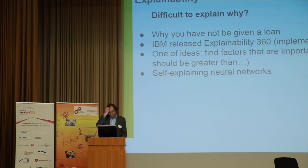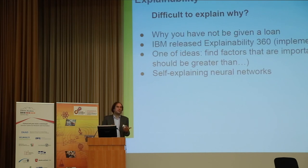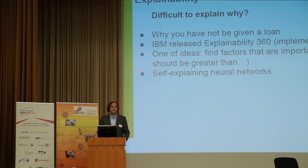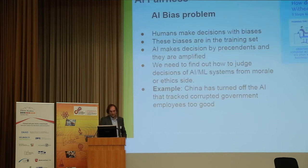It's difficult to explain decisions. IBM tries to do something but just implements it. There is something called self-explaining neural networks and some research in this direction. If you want to do something beyond a linear model for giving loans to people, you have to explain why you are not giving the loan — you cannot say the activation of the 100th layer was less than some threshold. You have to give an explanation and a recommendation for improvement. Explainability is a major challenge.